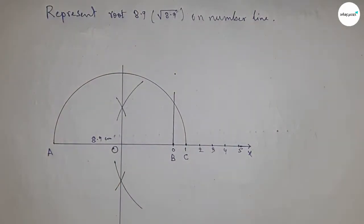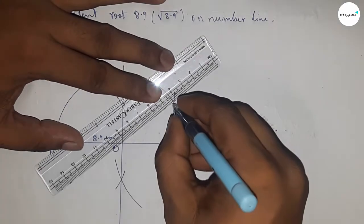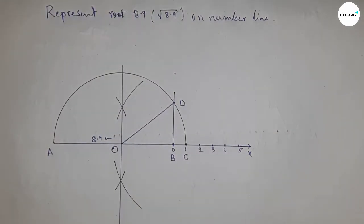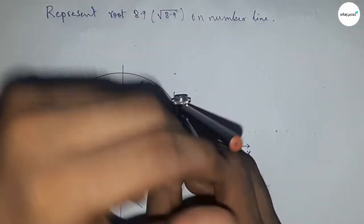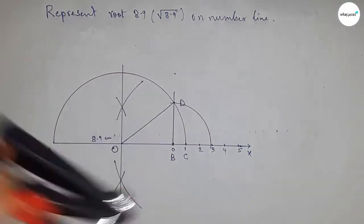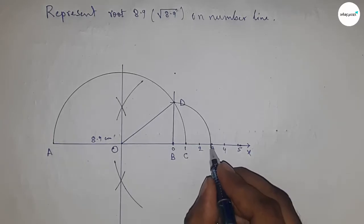Now joining this which meets at a point D. Next, I am going to take the distance BD by compass and drawing an arc which meets the number line at a point P. And this is the representation of root 8.9 on the number line.